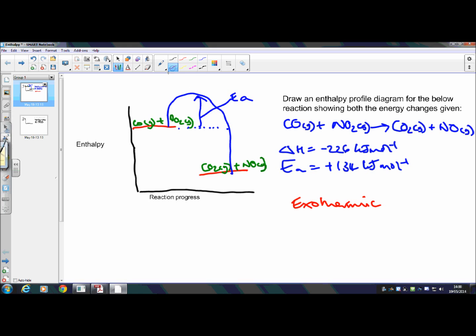So the third and final mark comes from labeling your delta H. So delta H for an exothermic reaction, your arrow has to go down. It starts from your reactants again and goes all the way to the product sign.